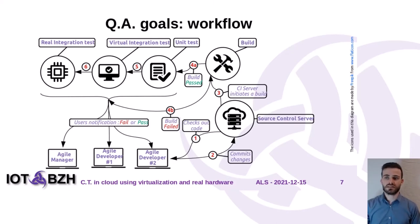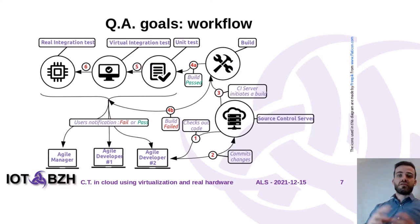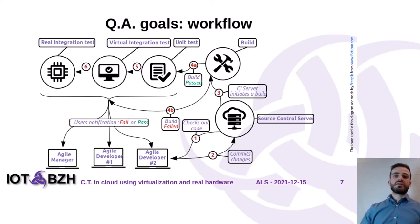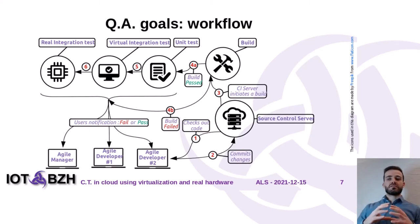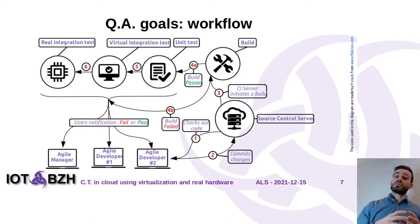Here are the goals for QA and the workflow. At the beginning of the chain, we have developers and managers. The developers commit changes on the Git server. Once these commits are done, the source server initiates a build on the build system. If this build passes, it can move on to the unit tests. If you know spec files in the RedPESC factories, the unit tests correspond to the check section of the spec file. Once unit tests pass, we can move on to the virtual integration tests, which are run inside virtual targets.